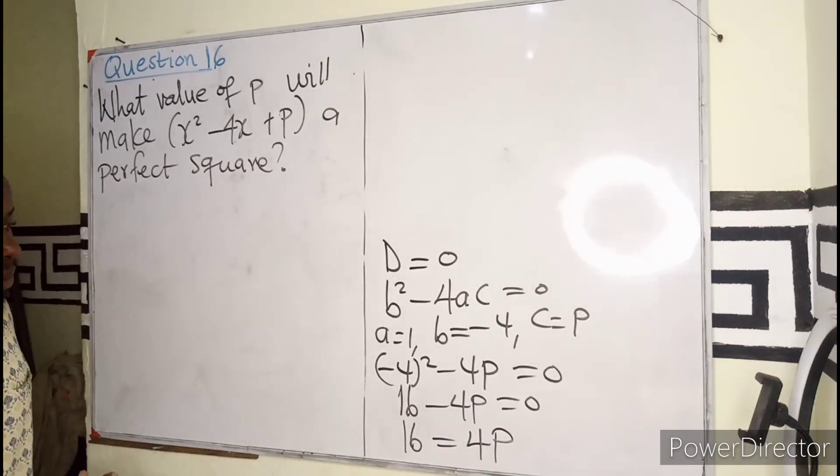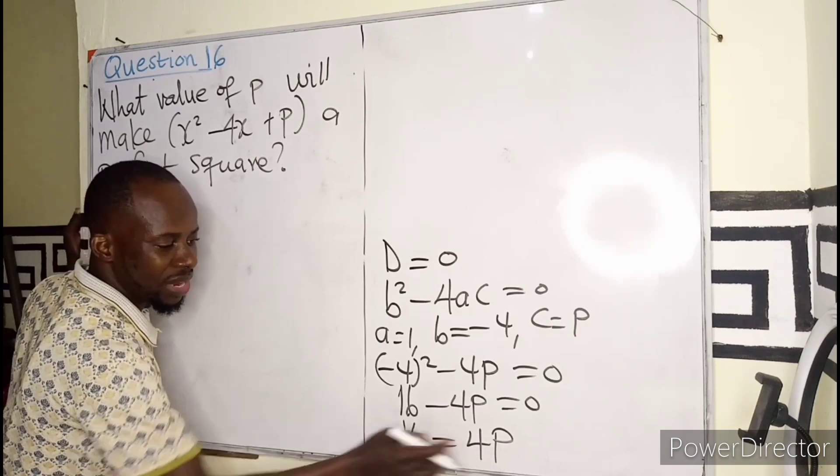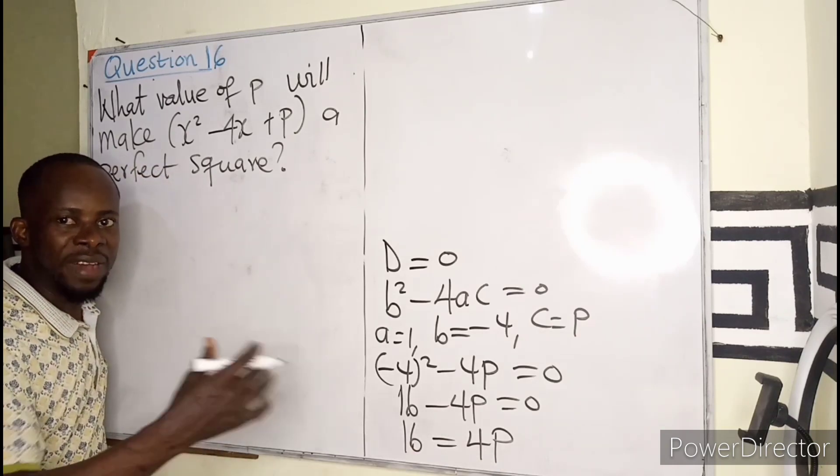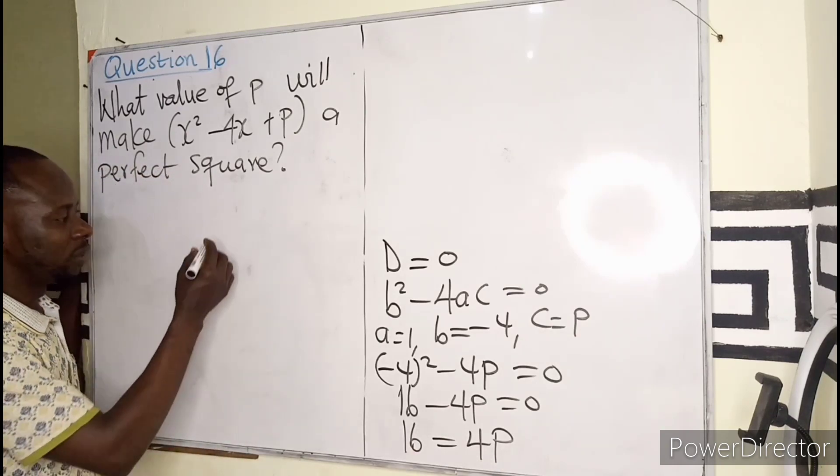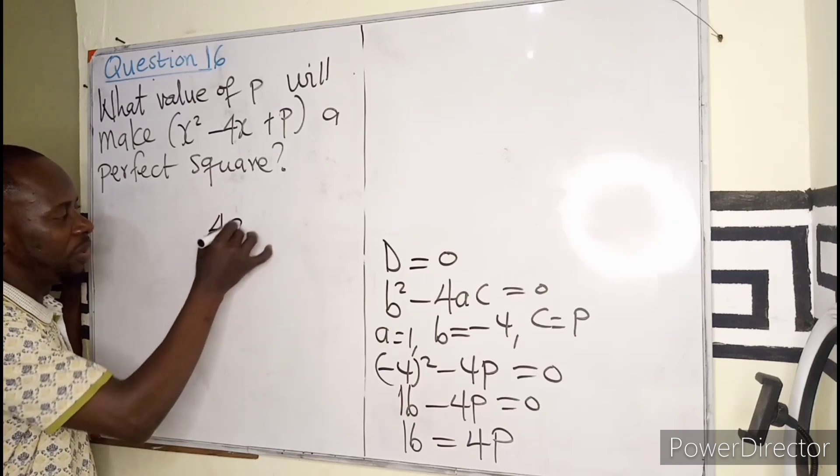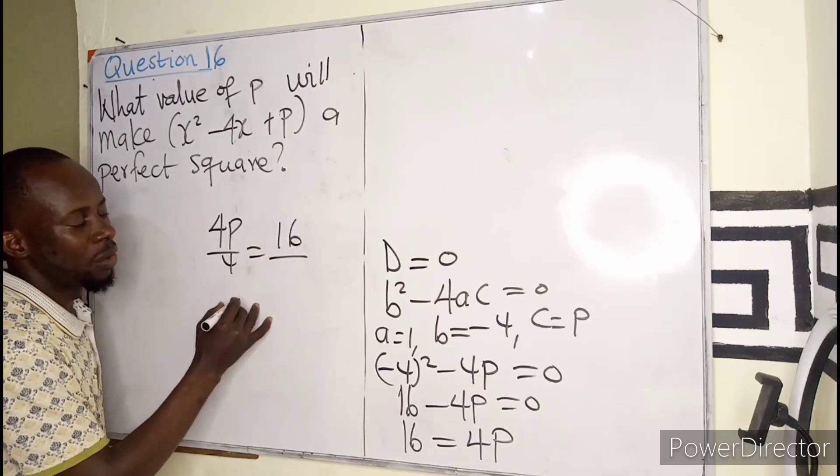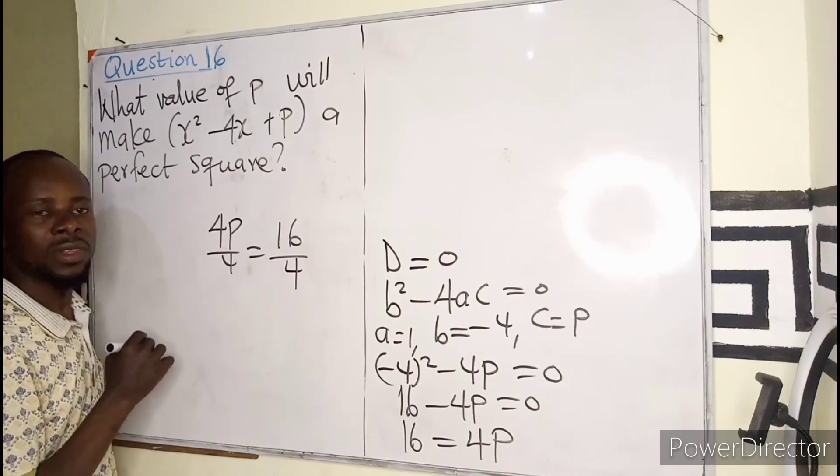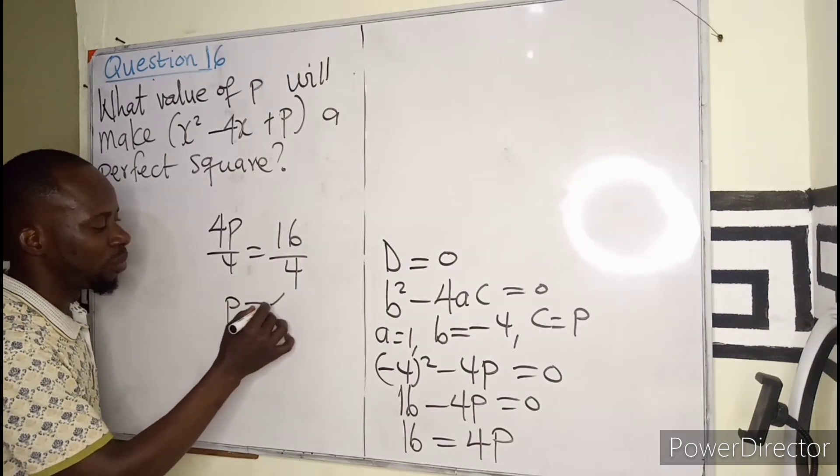But you can agree with me that if I'm looking for P, which is having the coefficient of 4, I divide both sides by that coefficient. So that becomes 4P over 4, 16 over 4. And P is just going to be 4.